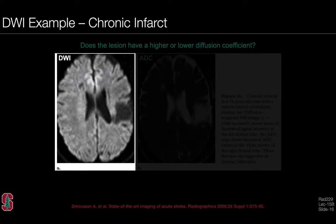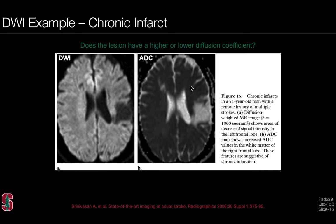A clinical example of diffusion-weighted imaging is a chronic infarct. On the DWI, the ventricles full of CSF appear dark due to high diffusivity. An abnormal region appears quite dark, suggesting a high diffusion coefficient. The ADC map confirms the lesion has a relatively high ADC. This technique is useful for evaluating changes in apparent diffusion coefficient in the brain, for example in chronic infarcts.